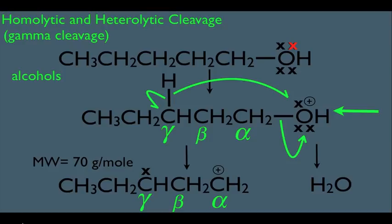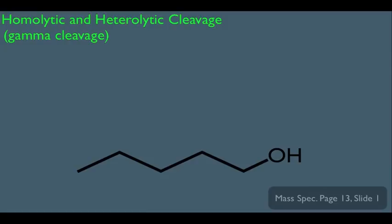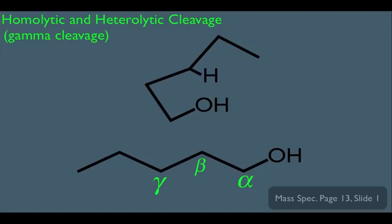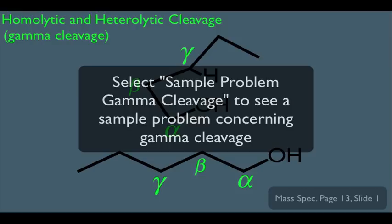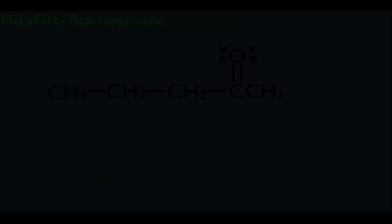So notice gamma cleavage involves simply the loss of water. Now, just in case you might be wondering why the gamma carbon — why not the beta, or the one after it — let me briefly explain. These bonds are all single bonds, which means they can rotate, which means it's possible that this molecule could take on a particular conformation where the gamma carbon is actually very close to the OH. Therefore, the gamma hydrogen is also close to the OH. Since these substituents are so close to each other, that's why they form water, and this molecule therefore loses water.